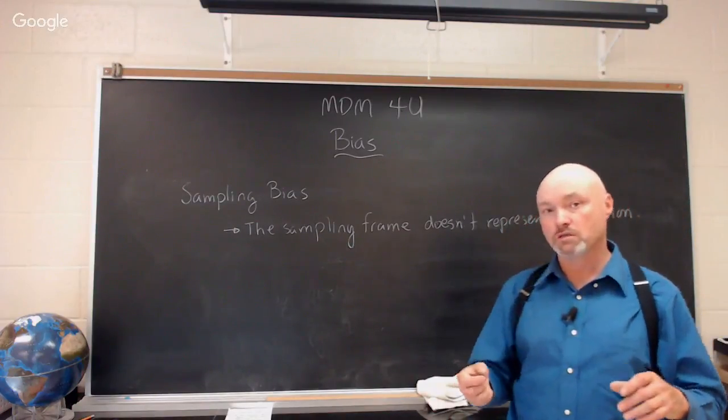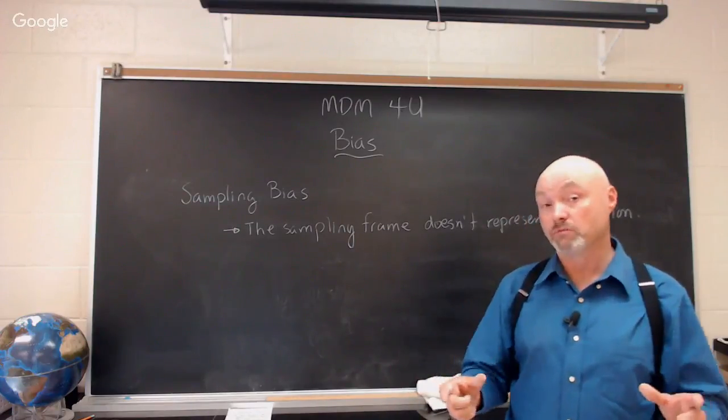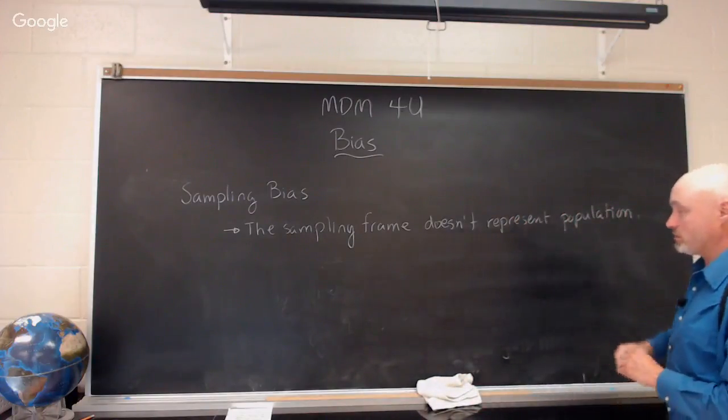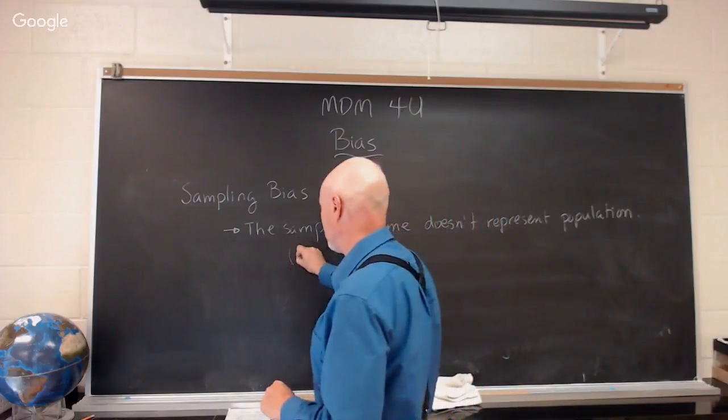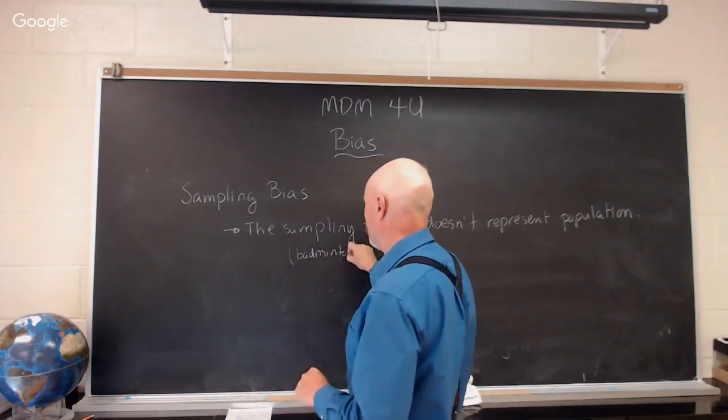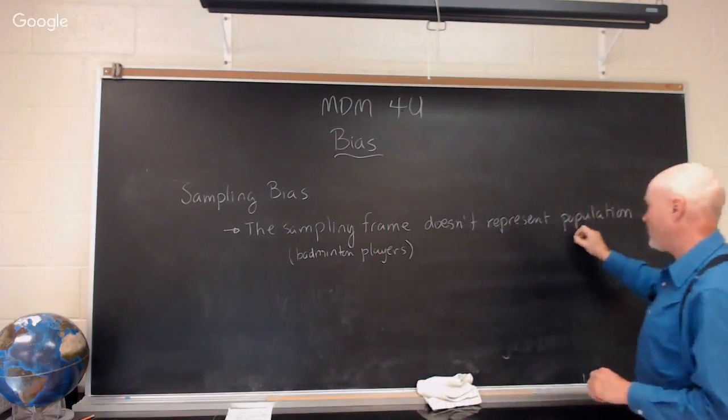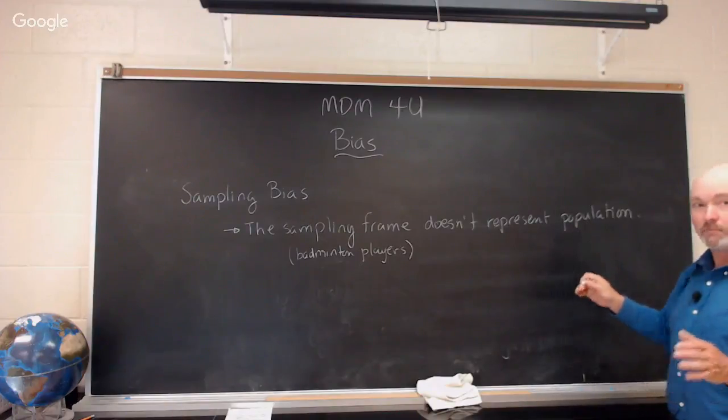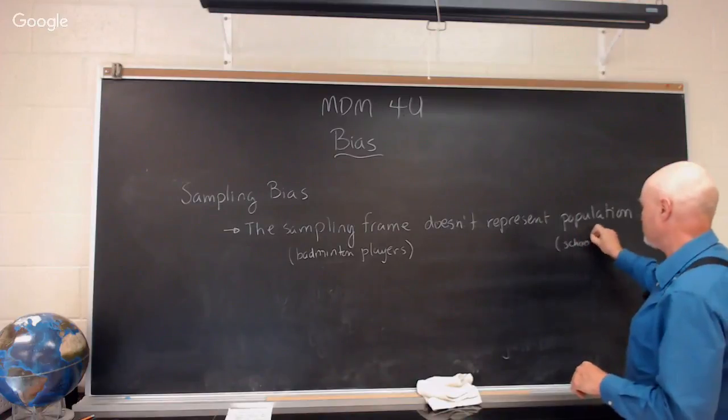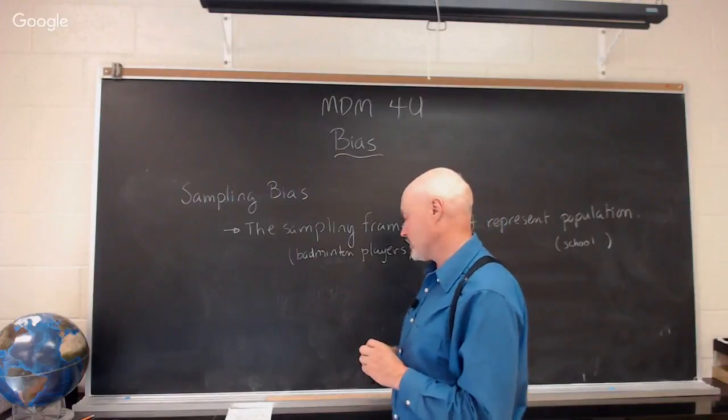The problem there is you've chosen a group of people that don't represent the average of the population. You've chosen the wrong sampling frame because it doesn't represent the population. The sampling frame could be badminton players. Sure enough, they belong to the school, but you want a better representative sample for the whole school. That's a form of what's known as sampling bias, or at least an example of it.